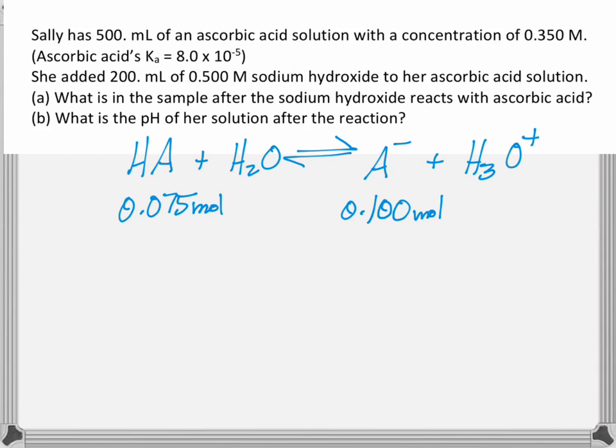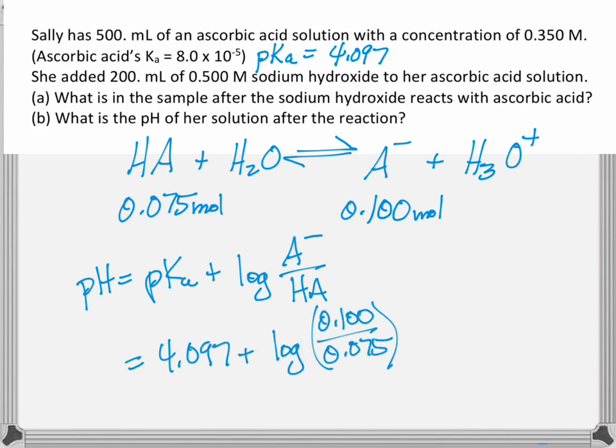Those are handy for us when we go to find the pH of the solution. Remember that the pKa of ascorbic acid is 4.097. We can calculate that from the ascorbic acid's Ka. And then we can use the Henderson-Hasselbalch equation to help us figure out the pH. We have moles of ascorbic acid and ascorbate here. It is okay to stay with moles and not go back into molarity because both ascorbic acid and the ascorbate are in the same solution and so their volumes are going to cancel when I change from moles to molarity.